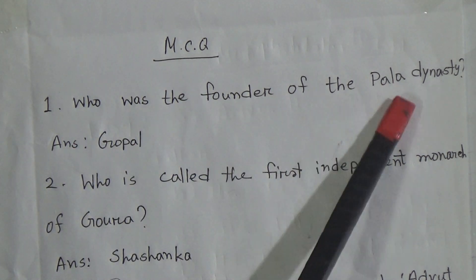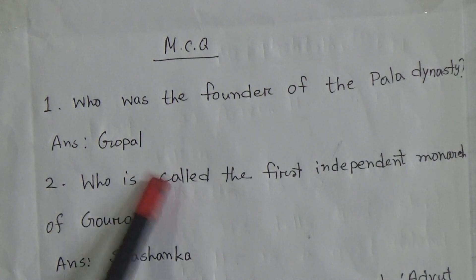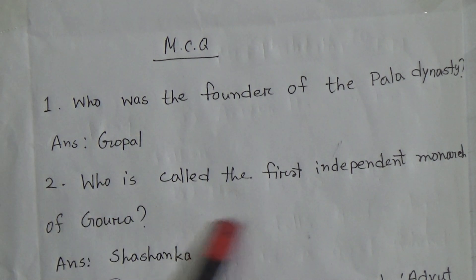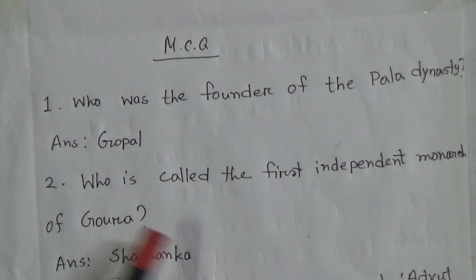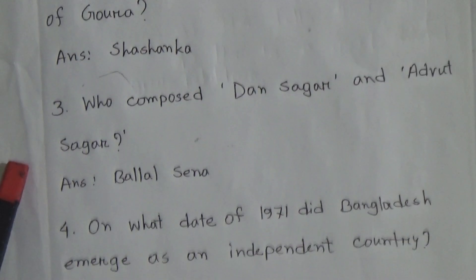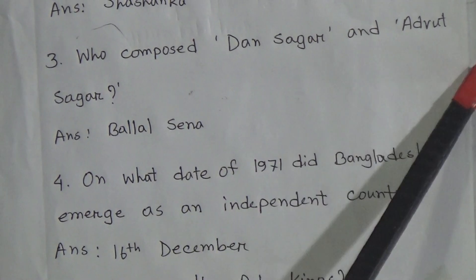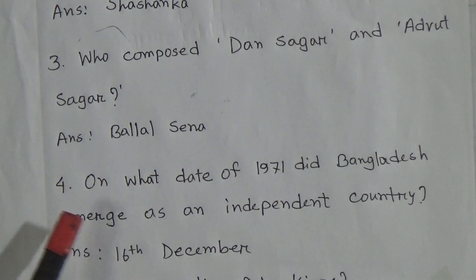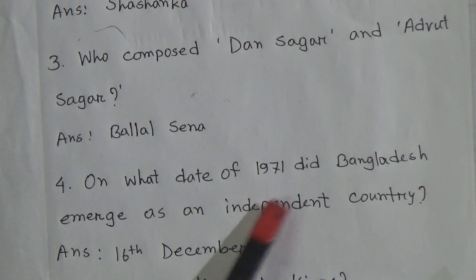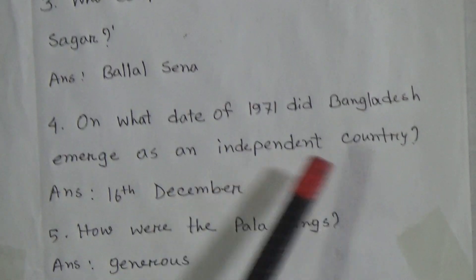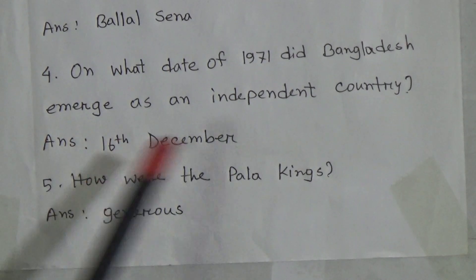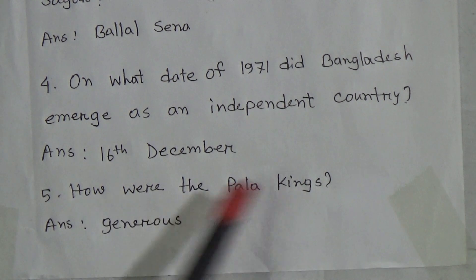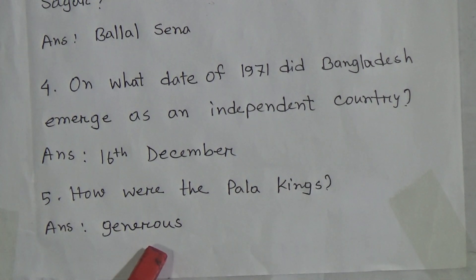Who was the founder of the Pala dynasty? Gopal. Who is called the first independent monarch of Gora? Shoshanko. Who composed Dhan Shagor and Odgut Shagor? Balal Shana. On what date of 1971 did Bangladesh emerge as an independent country? 16th December. How are the Pala kings? Generous.